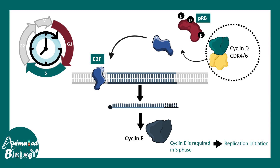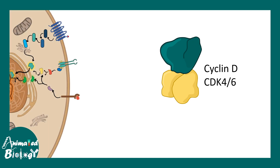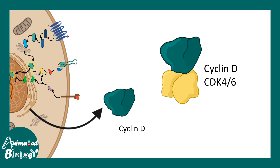Cyclin D and CDK4 are key players, and cyclin D CDK4 is also regulated by growth factor availability. Growth factor signaling leads to the production of cyclin D, so when there is too much growth factor, there is cyclin D production and suppression of PRB activity, allowing the cell cycle to progress to the next stage. This tells us the cell cycle is highly coordinated with nutrient availability, and PRB and cyclin D work at that interface.